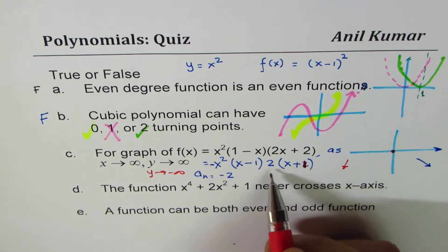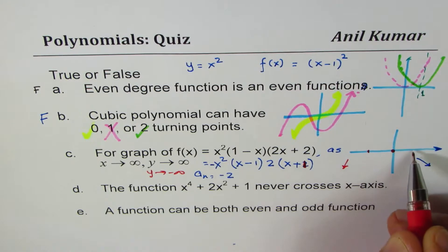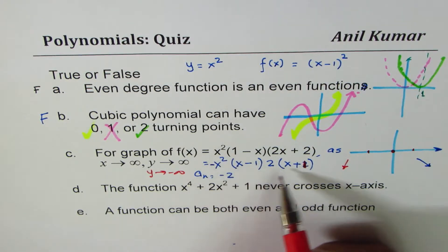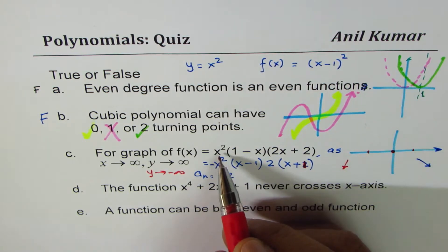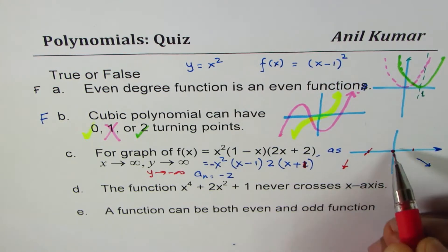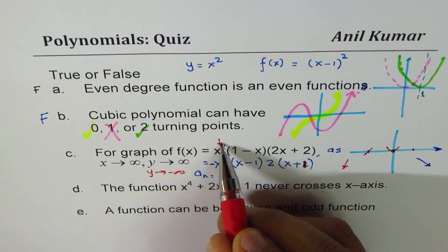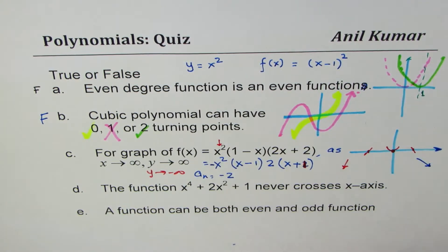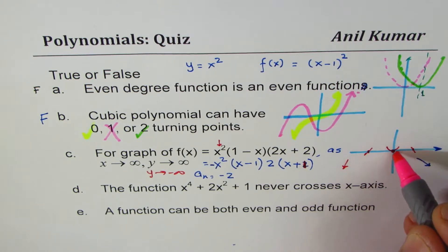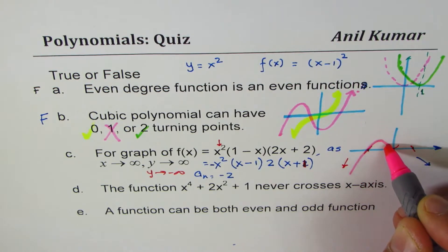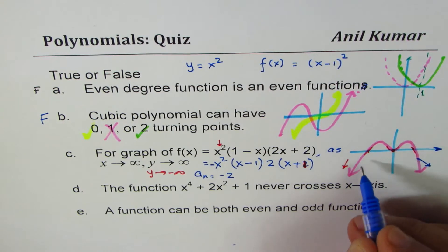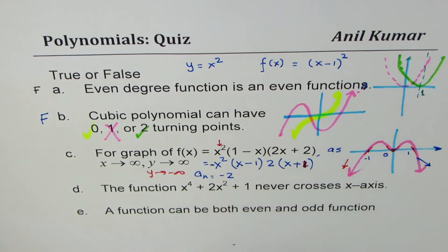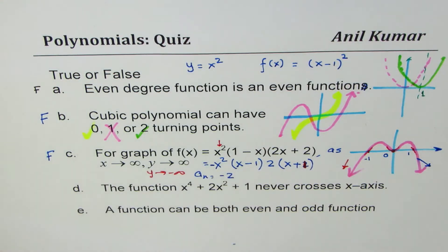The degree of the function is 1+2+1 = 4, which is even, so both ends share the same behavior — both going down. The zeros are at 0, 1, and −1. At x = 0 it's order 2, so the graph bounces back. Sketching the graph confirms the end behavior goes to negative infinity on both sides. Therefore this statement is also false.